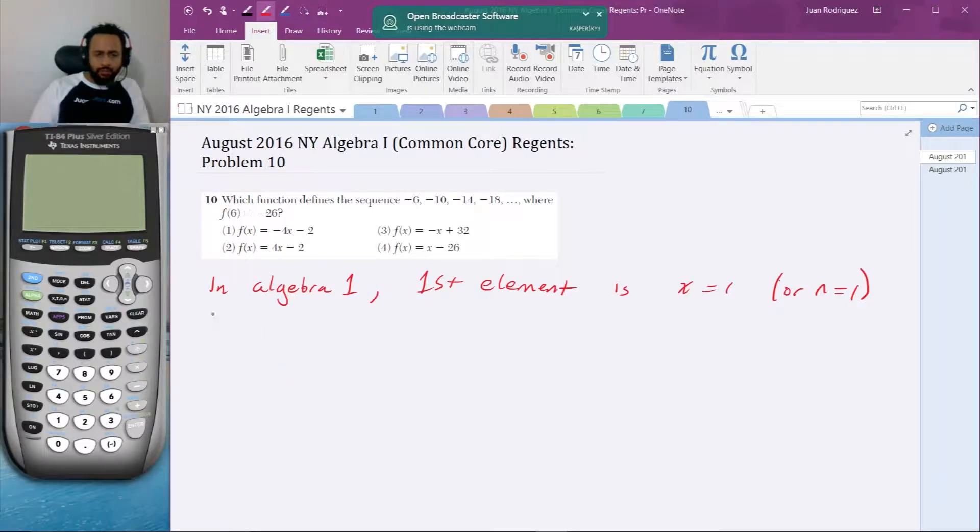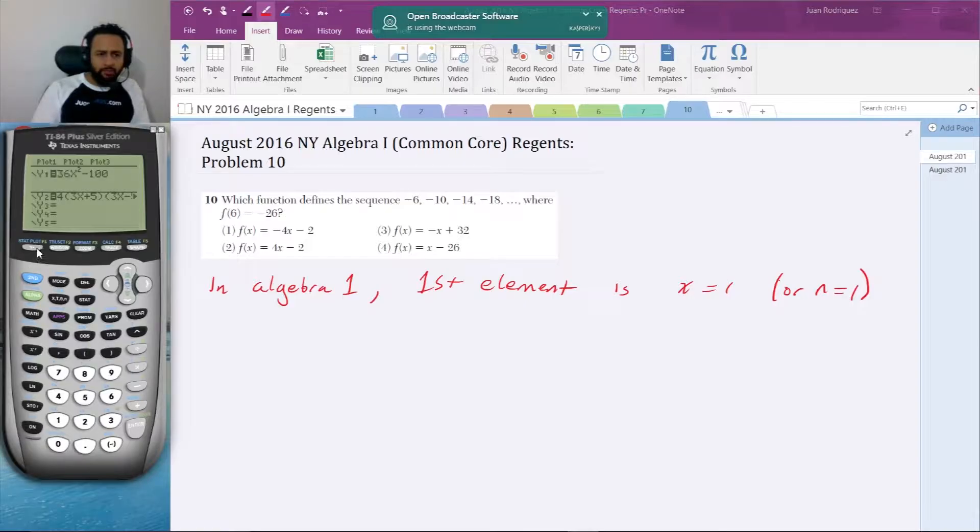So that said, how to do this problem? There is a quick way to do this problem on the calculator. I'm going to type in one of the choices: negative 4x minus 2, 4x minus 2, negative x plus 32, and x minus 26. Fair warning, at least one of these generally works for a bunch of these choices. If you want to take a test number and do it on paper, I would choose somewhere farther along the list.